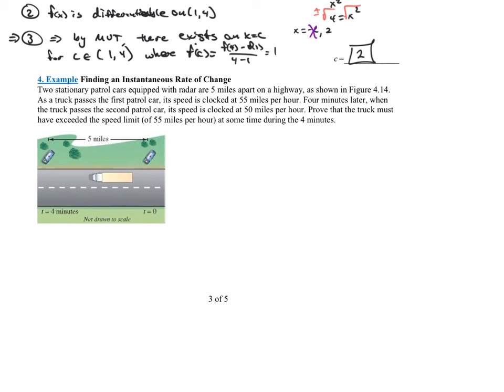Why do we care about this? Here's a really cool application. Two stationary patrol cars equipped with radar are 5 miles apart on a highway. As a truck passes the first patrol car, its speed is clocked at 55 mph. Four minutes later, when the truck passes the second patrol car, its speed is clocked at 50 mph. Prove that the truck must have exceeded the speed limit of 55 mph at some point during those four minutes.